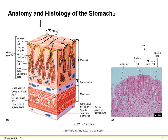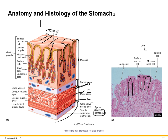The submucosa is vascularized, and the muscularis externa has three layers in the stomach: deepest oblique muscle, middle circular muscle, and outer longitudinal muscle, past which lies the adventitia or serosa — continuous with the visceral peritoneum. In a light micrograph, the folds are rugae and the spaces between are gastric pits.